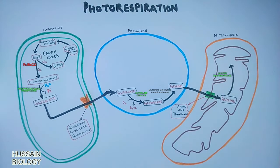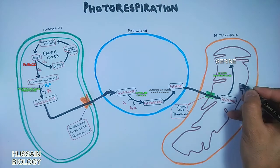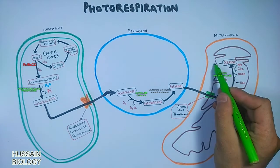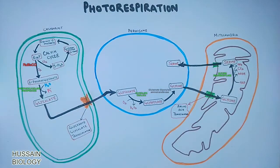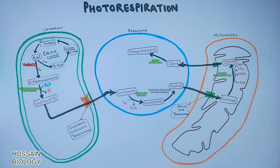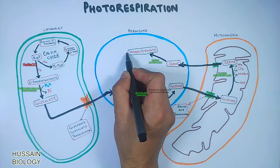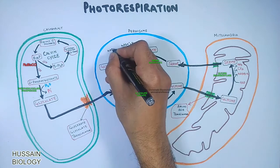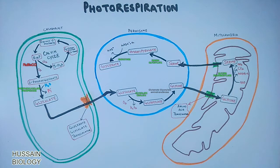Glycine is translocated into the mitochondria through the amino acid translocator of the inner mitochondrial membrane, where glycine decarboxylase enzyme decarboxylates it into serine; in that process NAD+ is reduced to NADH, CO2 is evolved, and NH3 is released. Serine is then translocated back to the peroxisome, where serine glyoxylate aminotransferase converts it into hydroxypyruvate.